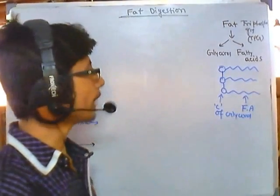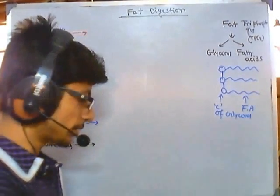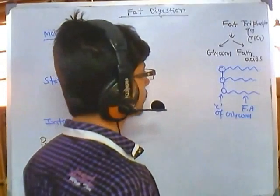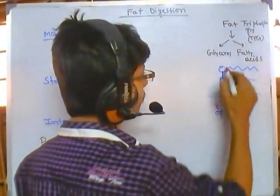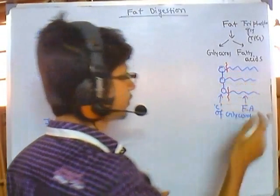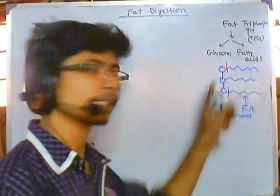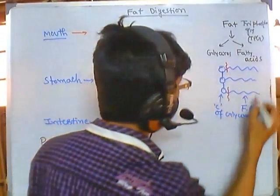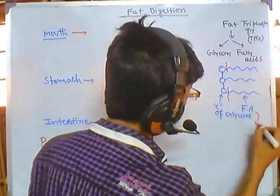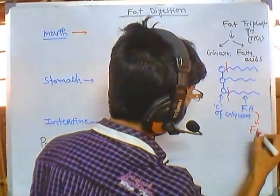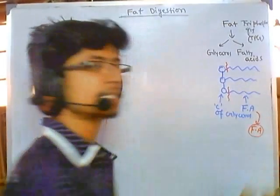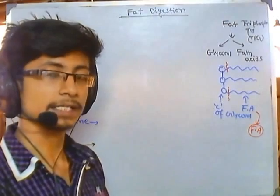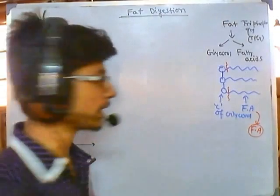To break down fat, we need to break the bonds between the fatty acids and the glycerol, so that we get the fatty acids themselves. Fatty acids can then be easily taken up by epithelial cells and some other types of cells.